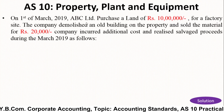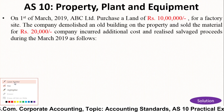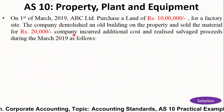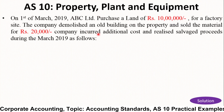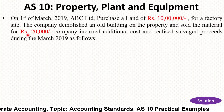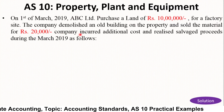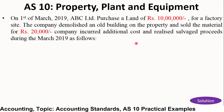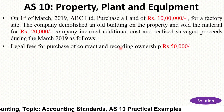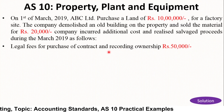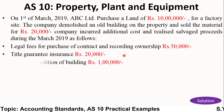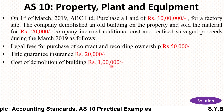In short, ABC Limited acquired land costing Rs. 10 lakh for a factory. On that land there was a building which was demolished by the company, and the salvage was sold in the market for Rs. 20,000. The additional costs incurred are: legal fees for purchase contract and recording ownership — Rs. 50,000; title guarantee insurance — Rs. 20,000; cost of demolition of building — Rs. 1 lakh.